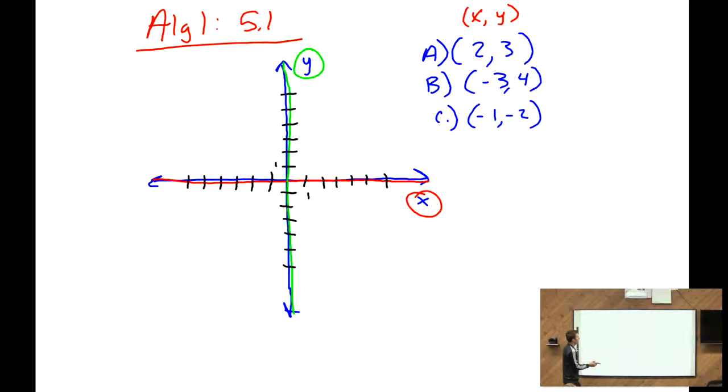So for the first coordinate, we have 2, 3. So what we're going to do is, we're going to go to the right 2, because this first 2 is the x. So we go to the right 2, and then we're going to go up 3, because that's what the y number is. And you would have a dot right there. So this first one, the dot is in red.